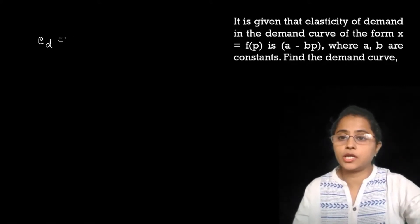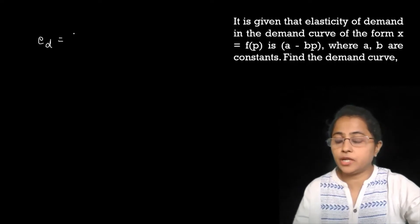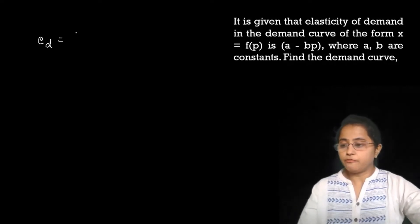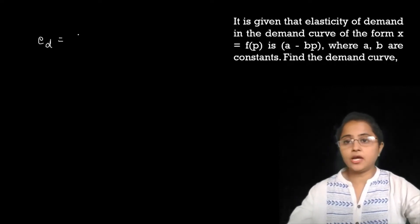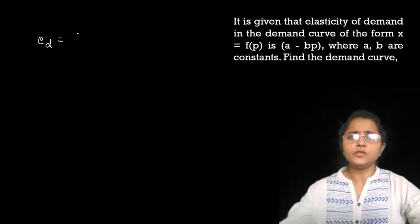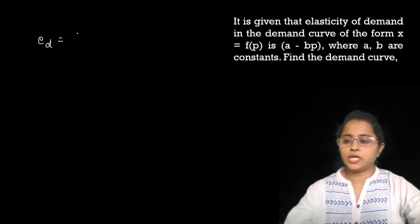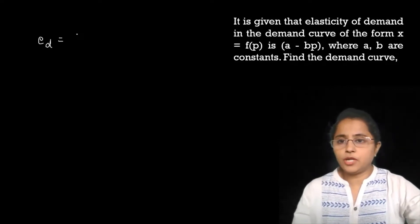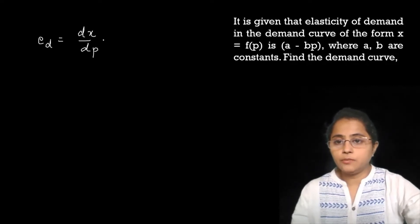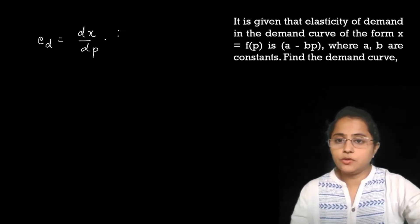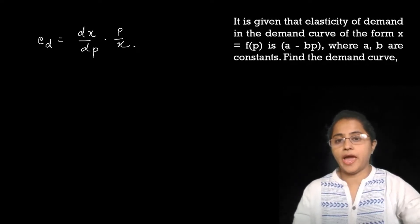First of all, what is elasticity of demand? What should we write in the formula? The formula is: elasticity of demand = dx/dp × p/x.